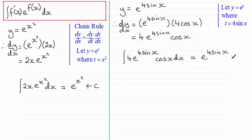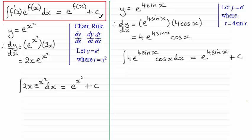We put the constant of integration in, plus c. It does seem to suggest that if you've got an integral that's got this form, the answer is going to be the exponential function e to the power f of x, plus the constant of integration. So let's take this idea further.